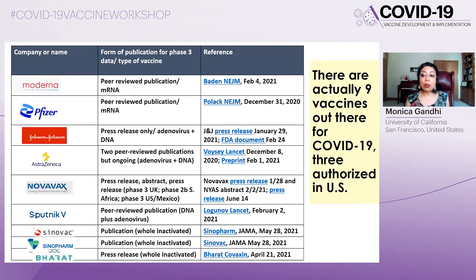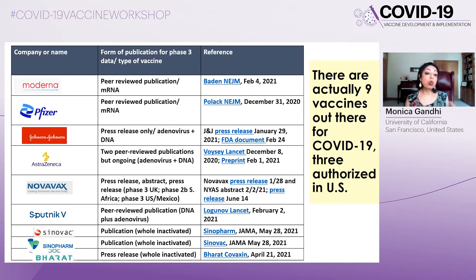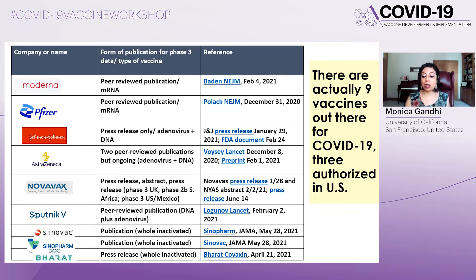We now have nine COVID-19 vaccines, which is quite an accomplishment this far into the pandemic. We have three that are authorized in the U.S., and then six more worldwide. These vaccines are in various stages of being published, or some are only available in press release form. I'll go over some of the design of these vaccines so I can talk about their protection from transmission and infection.